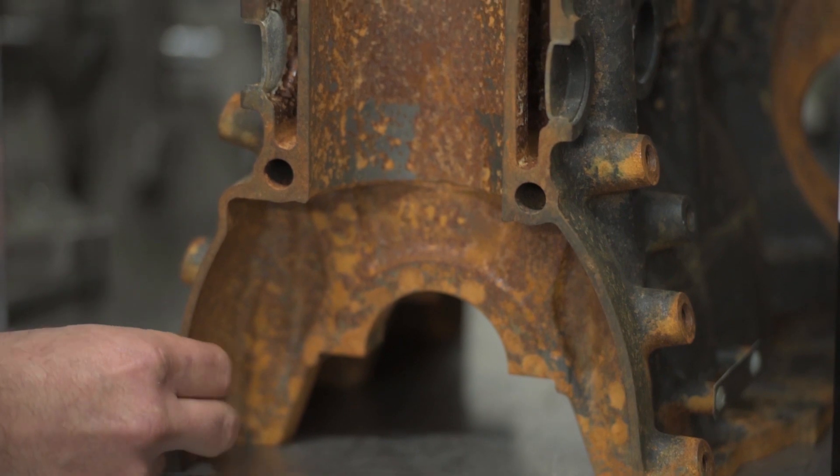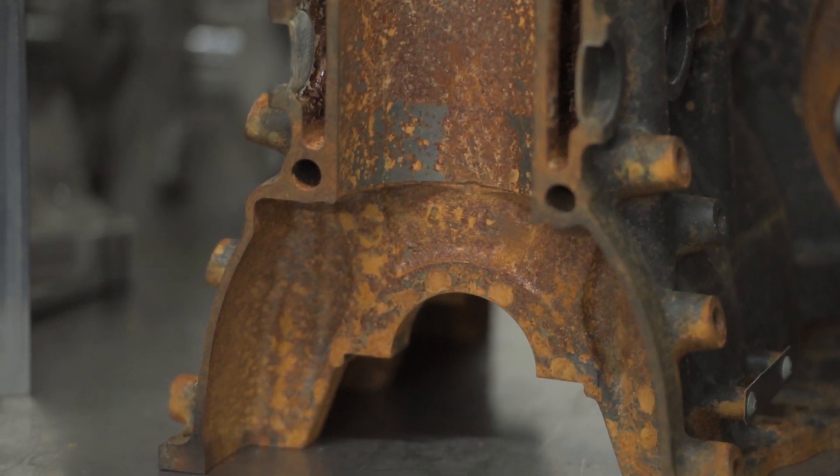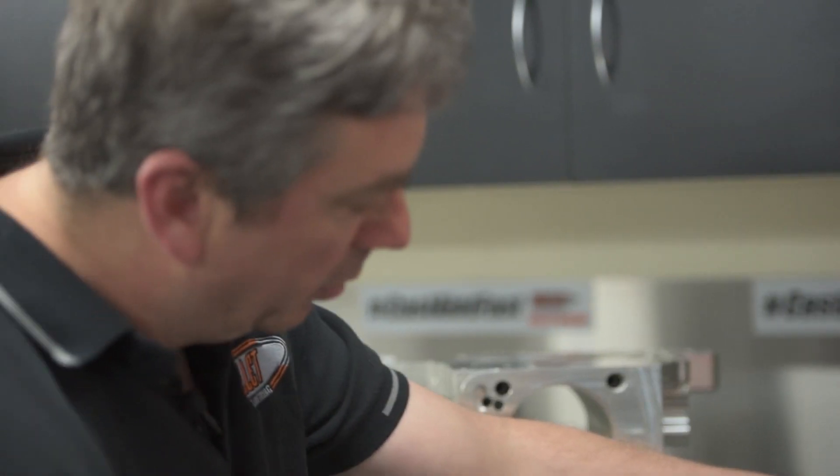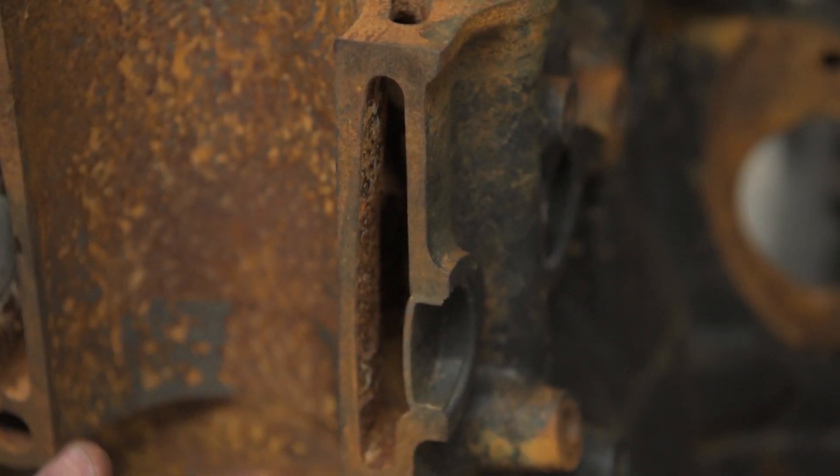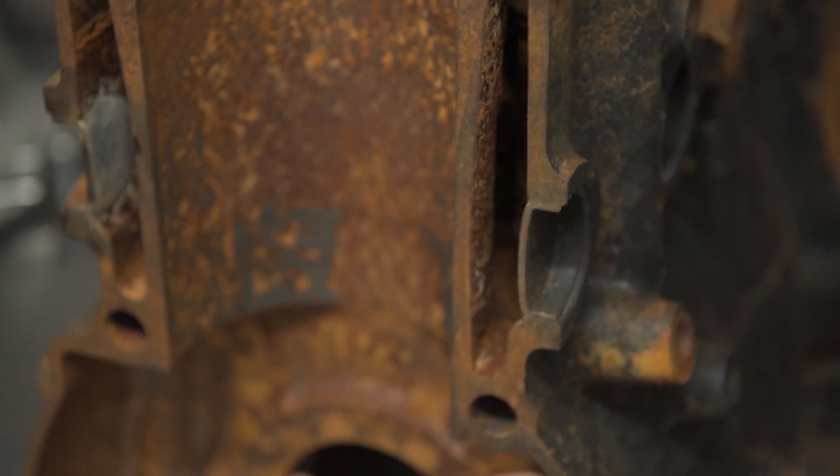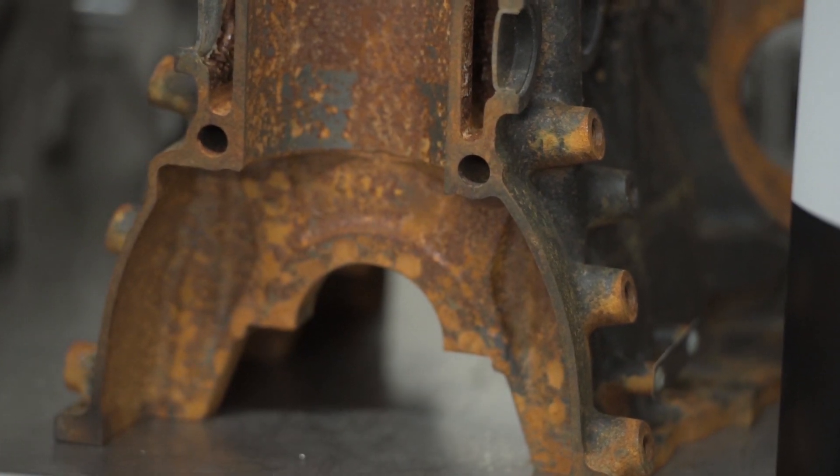You just wouldn't assume that they would be that thin when you're looking at a block that hasn't been cut in half. The things to take note of here is how thin these areas are, and also these are your main oil galleries here, so you can see how close they are to the crankcase area.